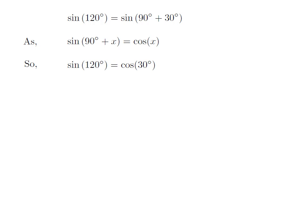Let us apply the above identity for sine of 120 degree. Here, x is 30 degree, so sine of 120 degree is equal to cosine of 30 degree.